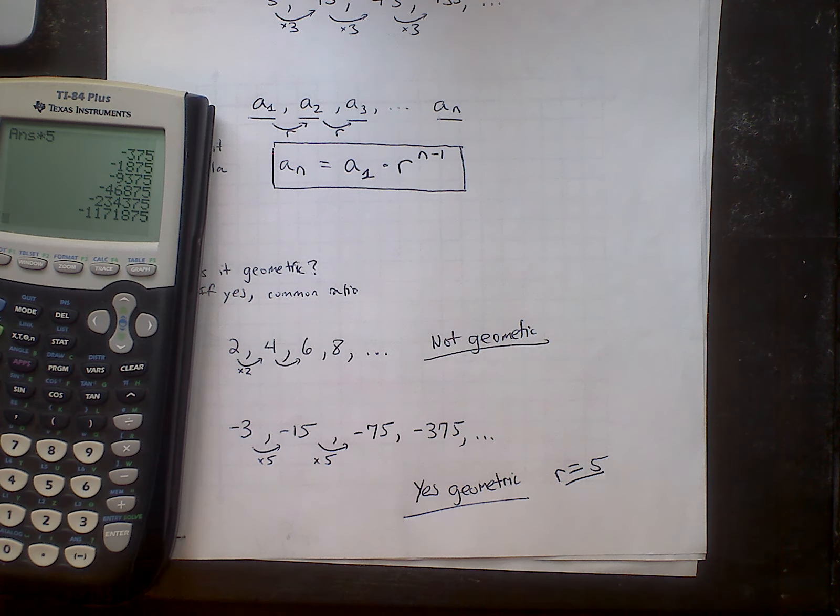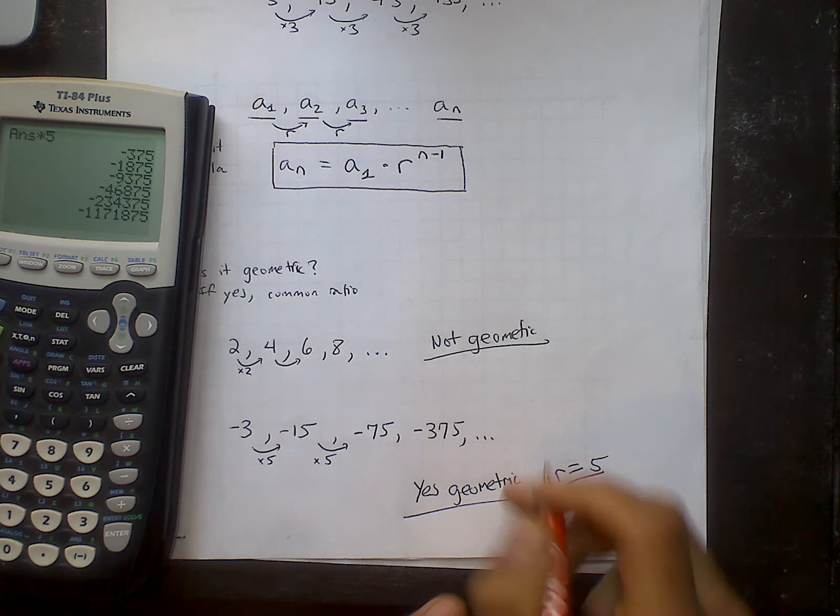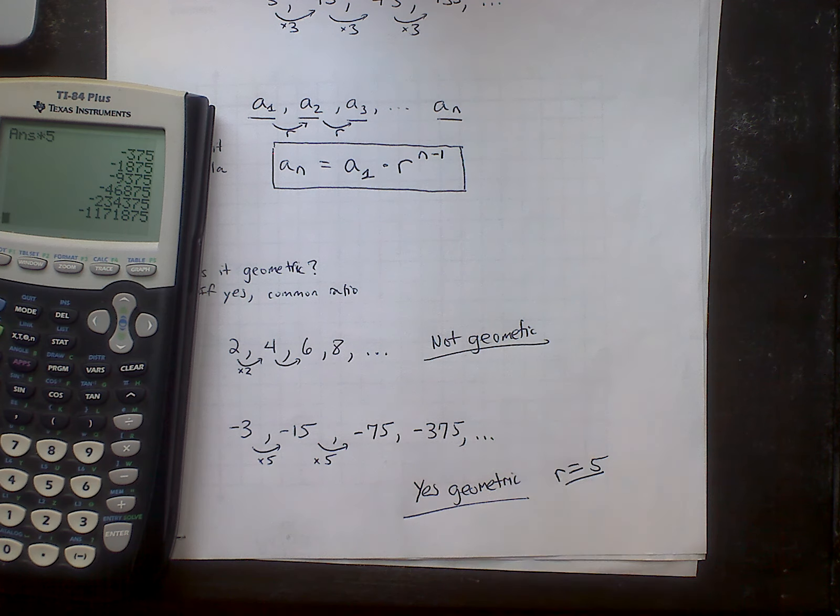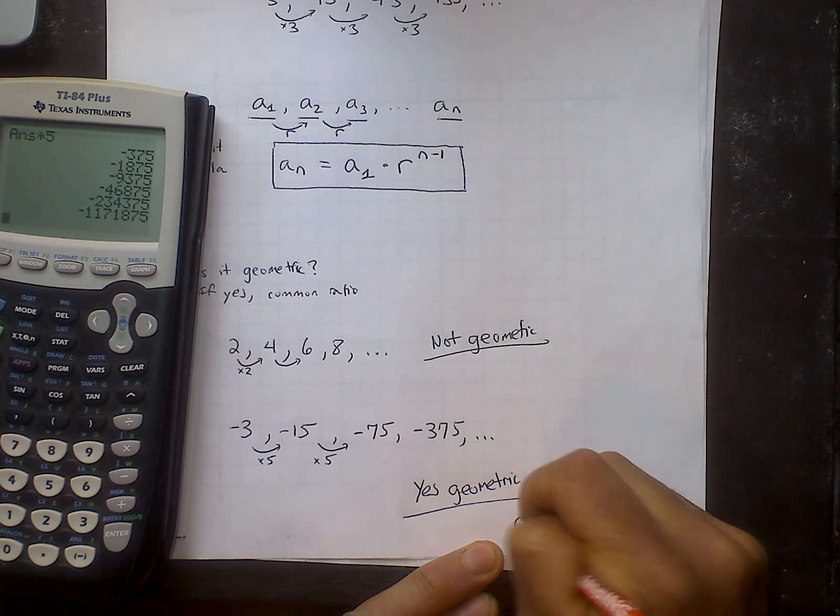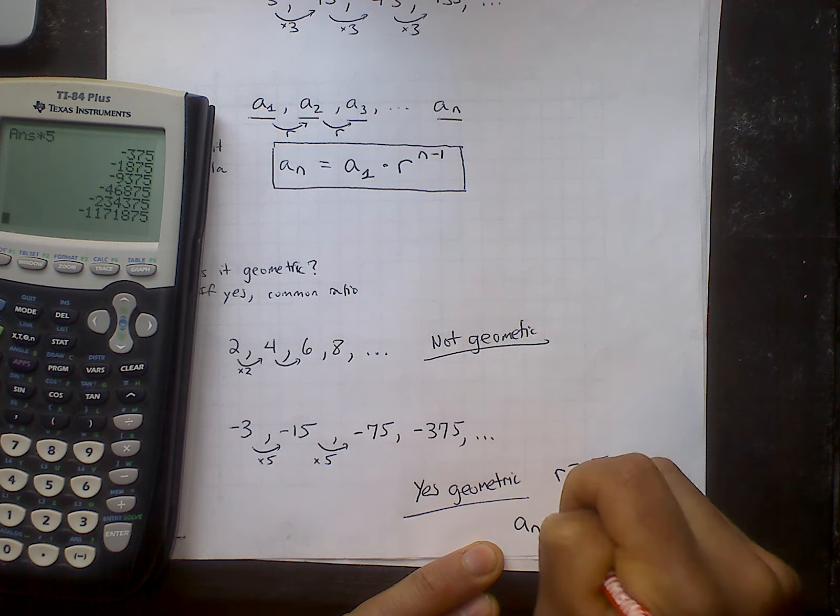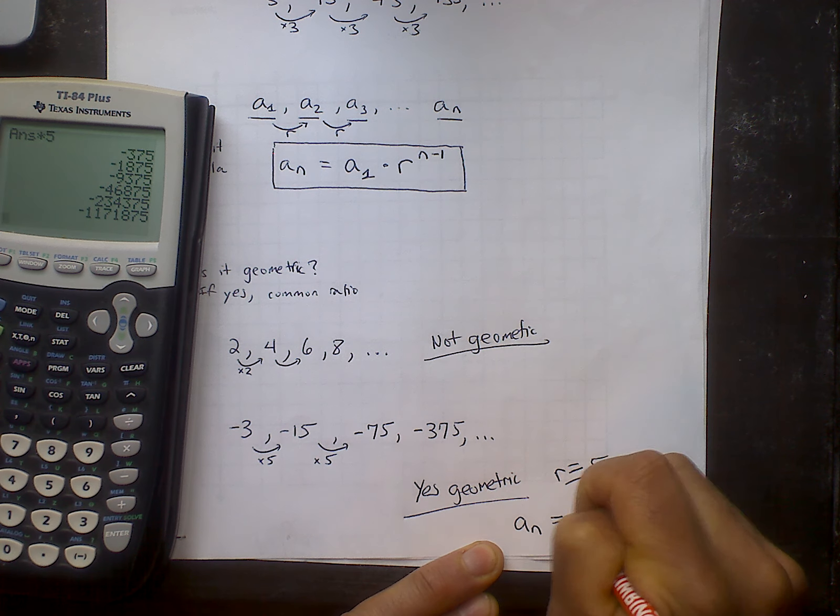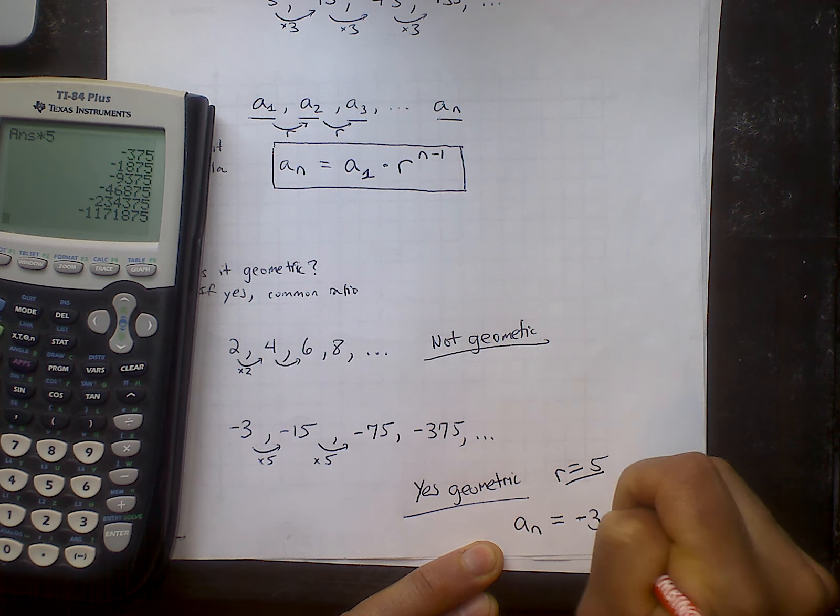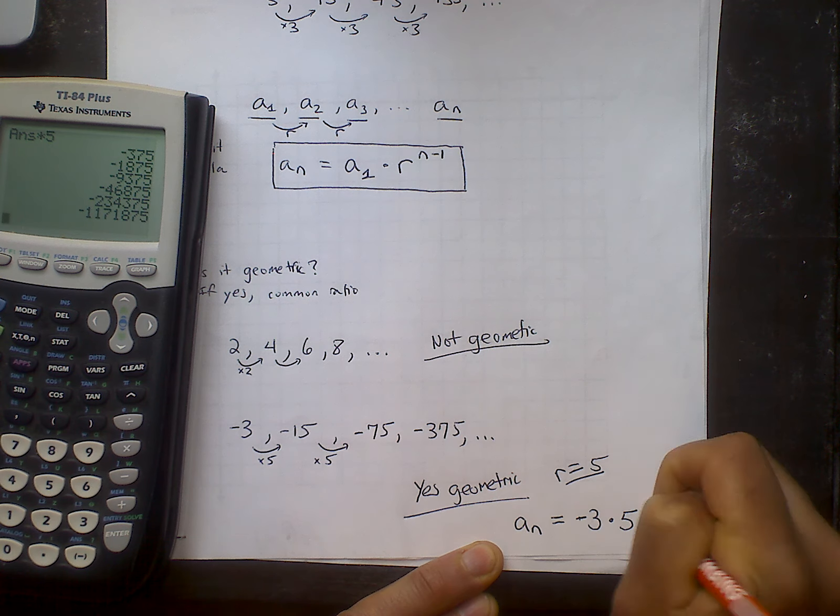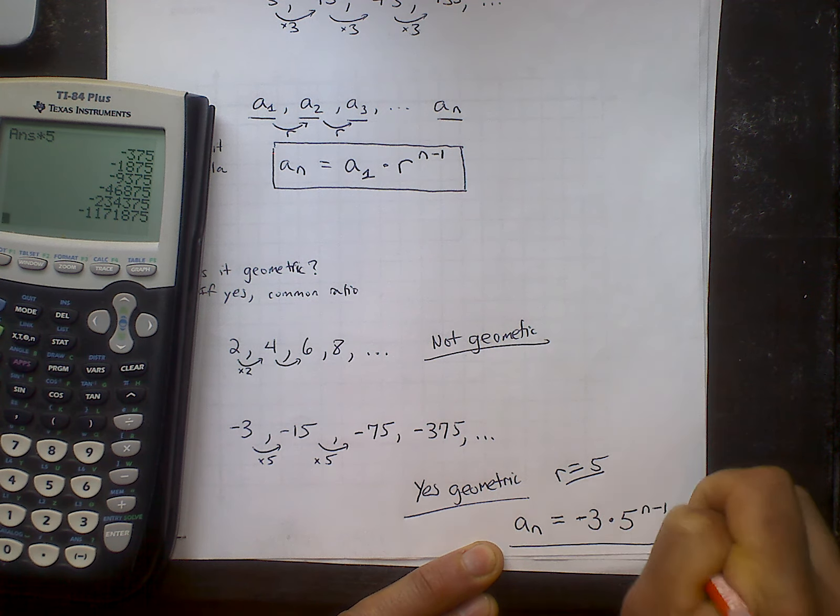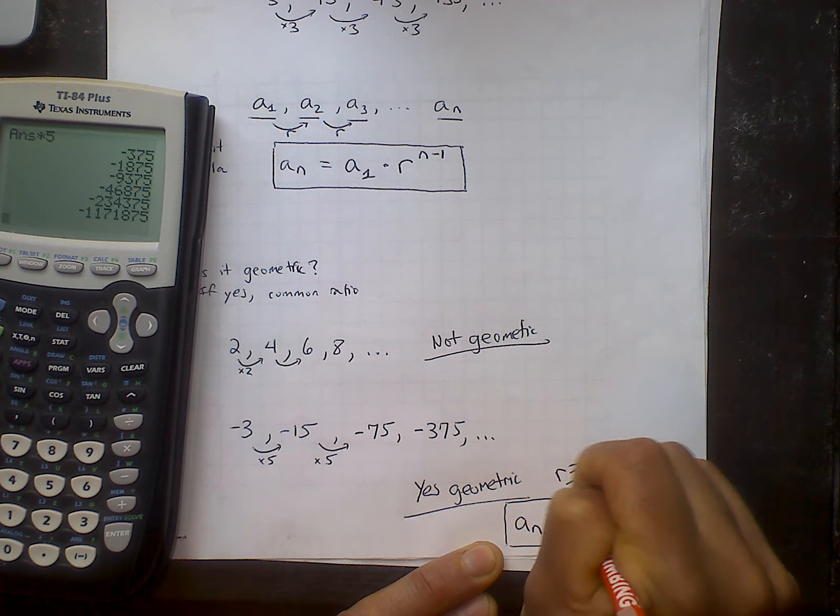I'm also going to write down the explicit formula just so you get some practice of that. If I want to jump to any term of this sequence, to jump to the nth term, I simply start at the first term, which I say is negative 3, times the common ratio, which I said was 5, and I raise that to the n minus 1. That would be the explicit formula for this particular sequence.